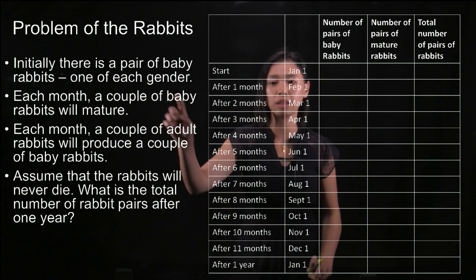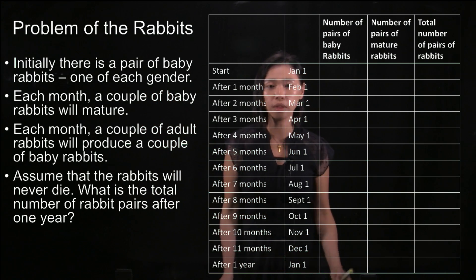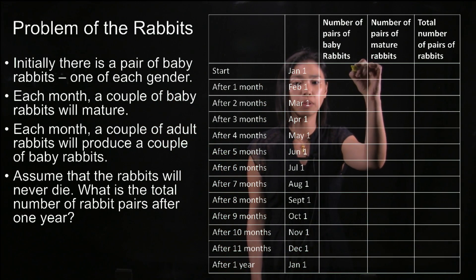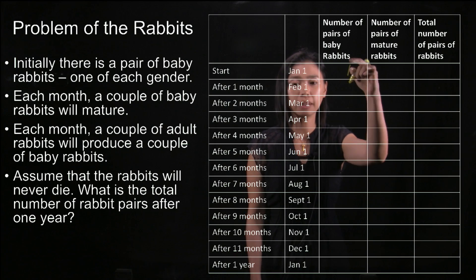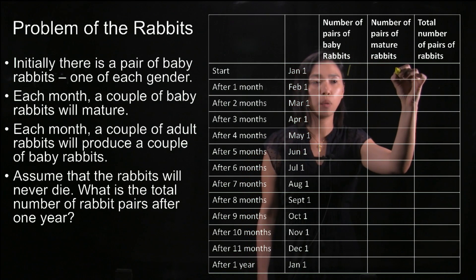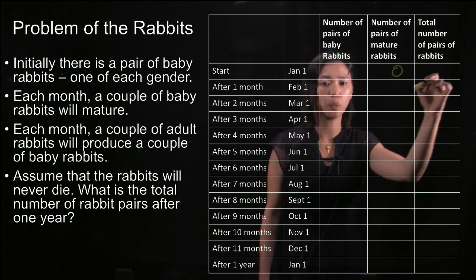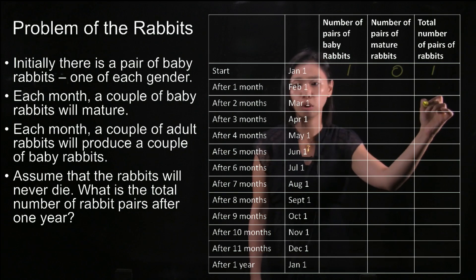The question says initially there is a pair of baby rabbits, one of each gender. So we will put down a one here, meaning there is one pair of baby rabbits. There will be no mature rabbits, so adding up, we have one pair of rabbits in total.